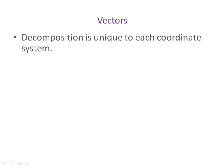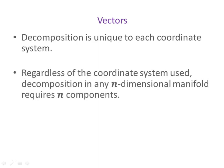When you decompose vectors into coordinate components, those coordinate components will be different depending on which coordinate system you choose to work with. However, there is something that does remain common, and it's this, that regardless of the coordinate system used, decomposition of any n-dimensional manifold requires n components. So if we're working with a three-dimensional Euclidean space, no matter what coordinate system we use to represent the vector in, we're always going to have to decompose it into three different components. And as I say, they can look vastly different, but there will always be three components.